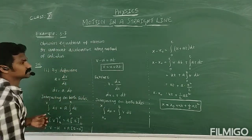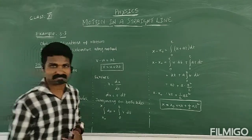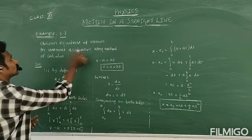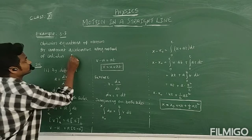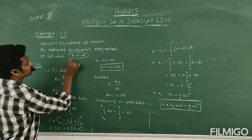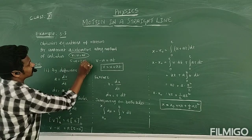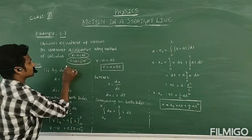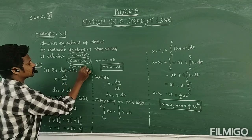You already know the equations of motion from the basic method and the algebra method already studied. I remember that the equations are: V is equal to U plus AT, then S is equal to UT plus half AT squared, and V squared is equal to U squared plus 2AS.